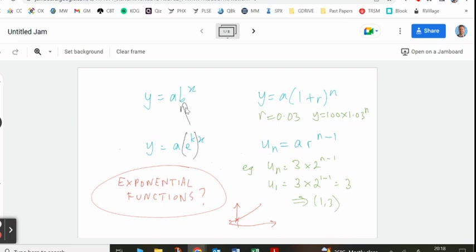It's useful sometimes to have this a e to the kx form because that's easy to differentiate, and also because it's the form which is given with a regression analysis, which I'll talk about in a bit.